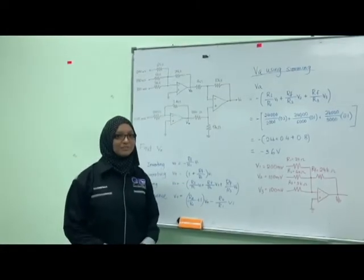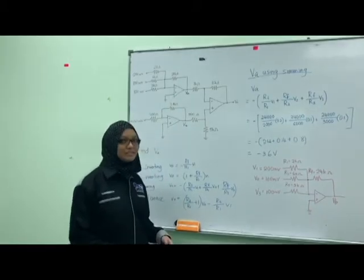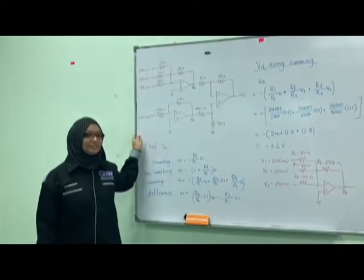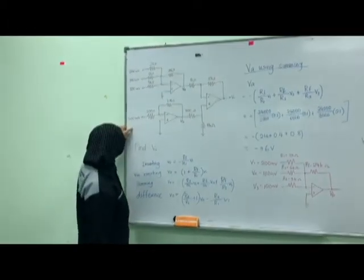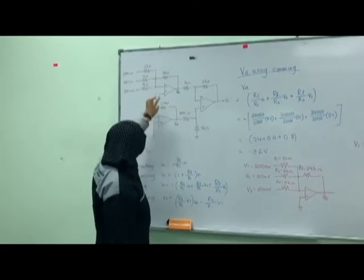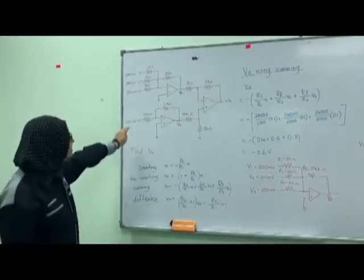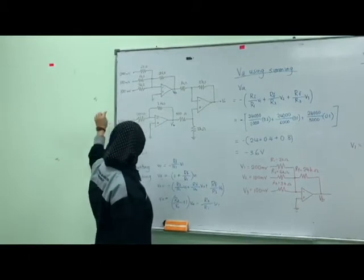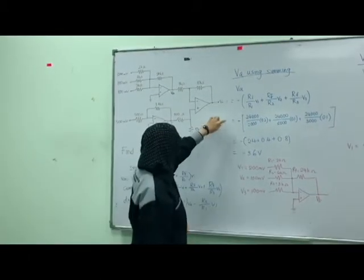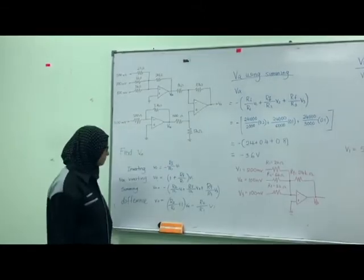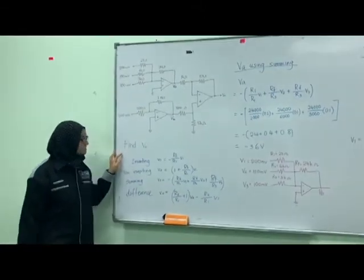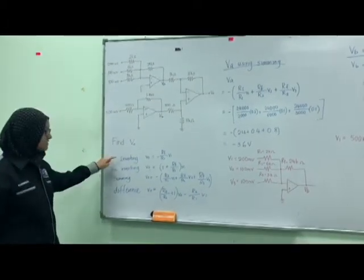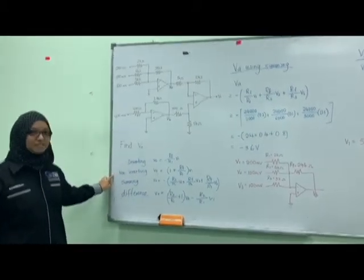Now I am going to give you an example question about the operational amplifier. This question involves three amplifiers: as you can see here, we have three types — Summing, Inversion, and Difference. The question is: how do we combine the data? Let's list the equations that we have in operational amplifiers.